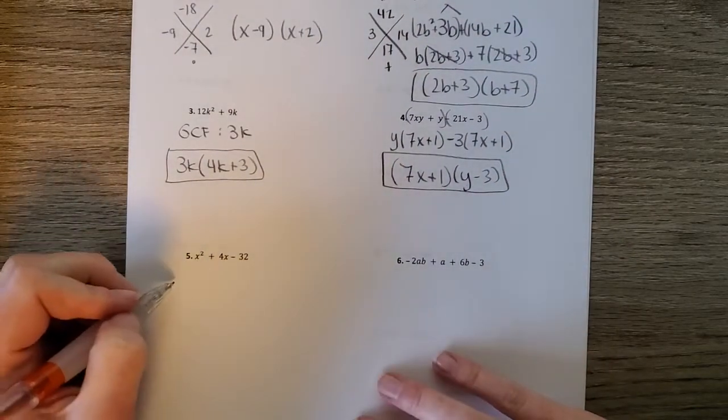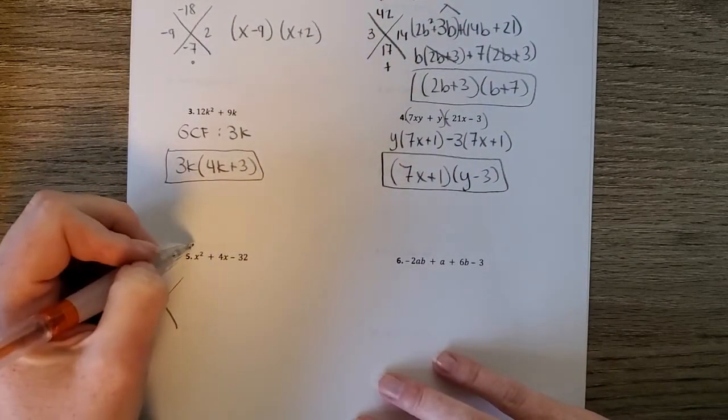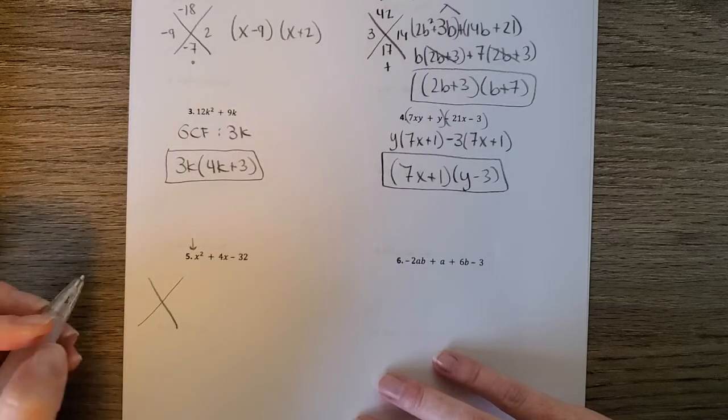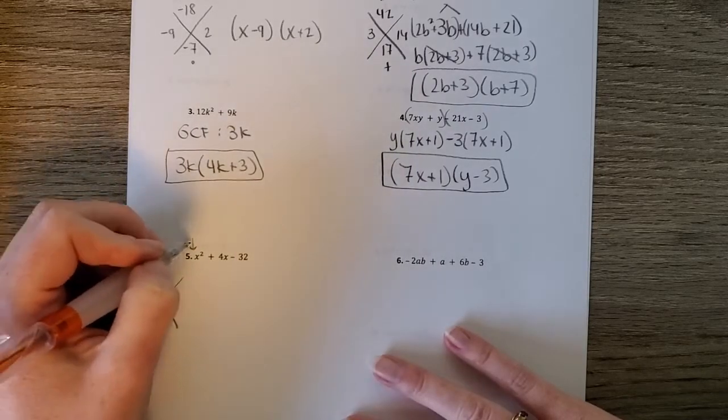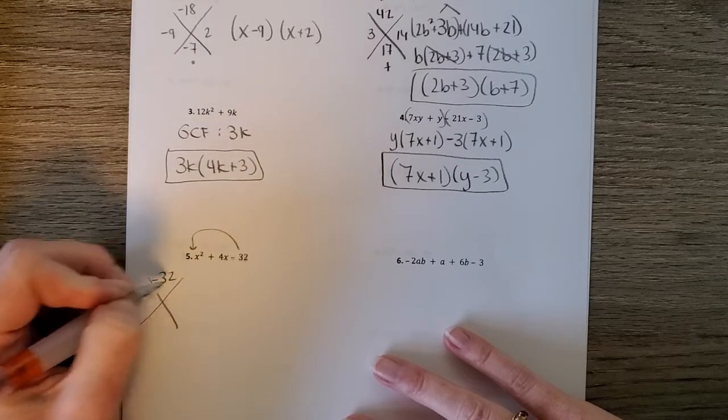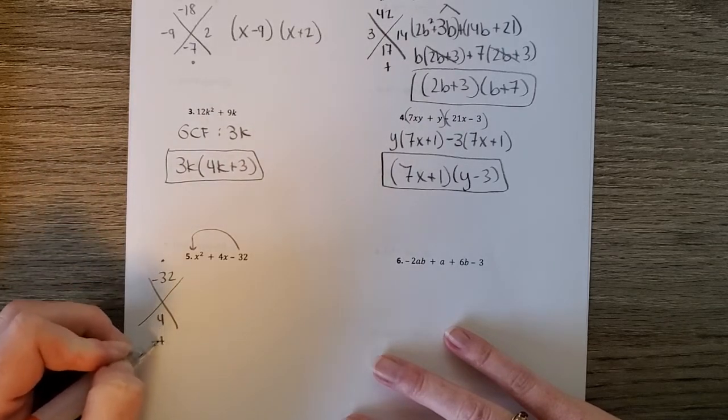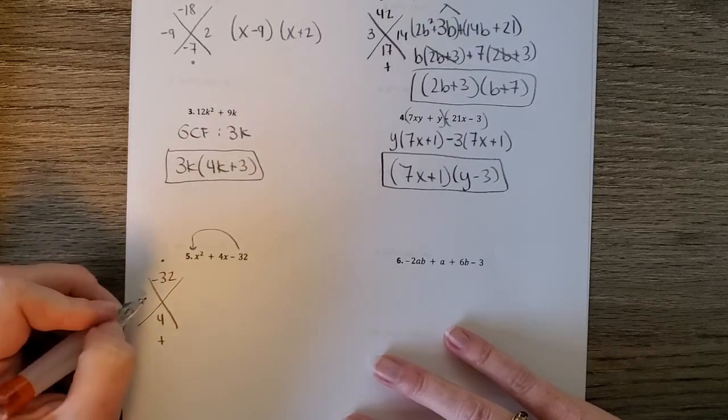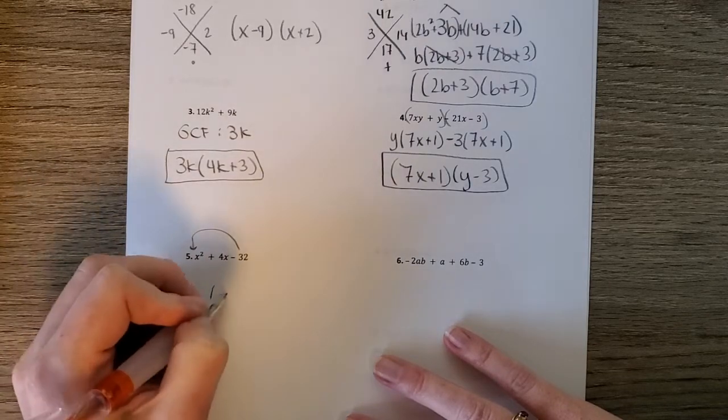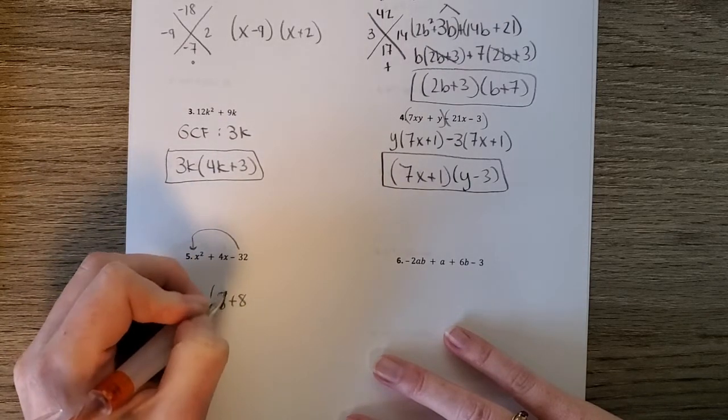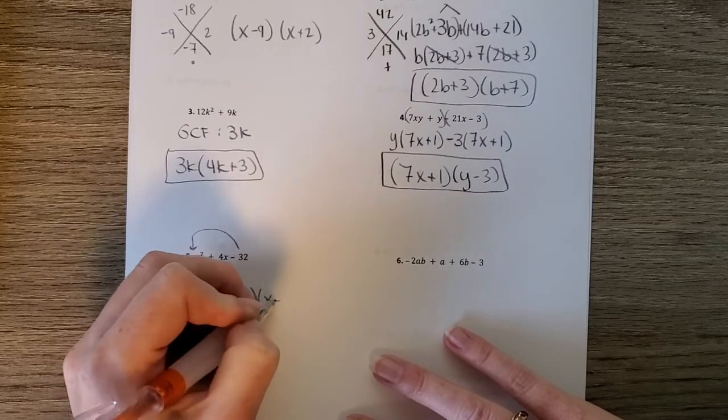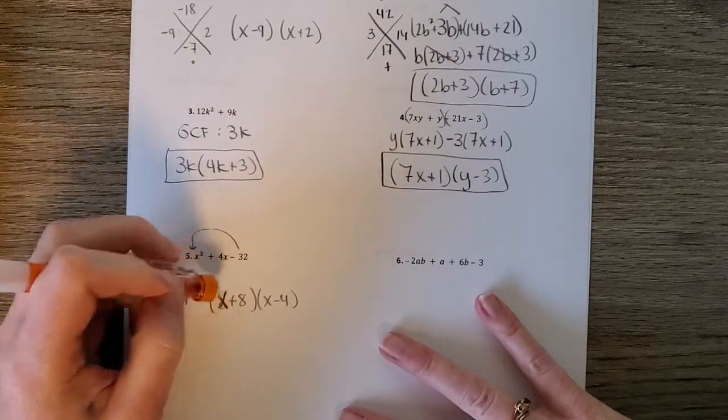And then number 5 is 3 terms. So split the middle. We don't have to do split the middle. We can do shortcut because a is 1. So we've got 1 times negative 32. And then 4. What multiplies to negative 32 and adds to 4? 8 and negative 4. So x plus 8. Sorry. x plus 8 and x minus 4. And that's an x not an 8.